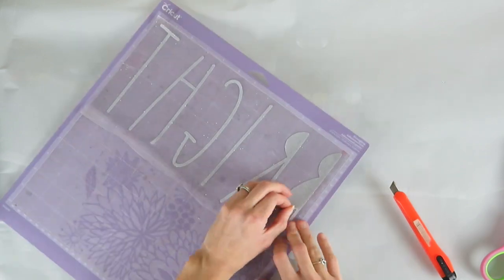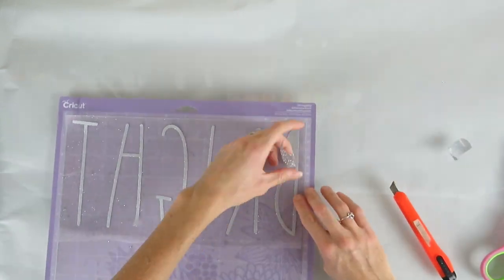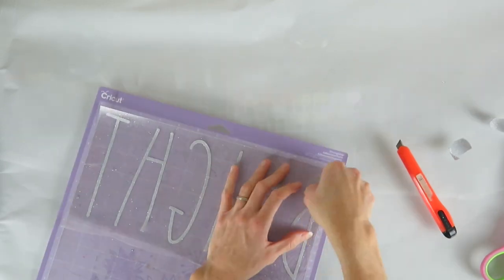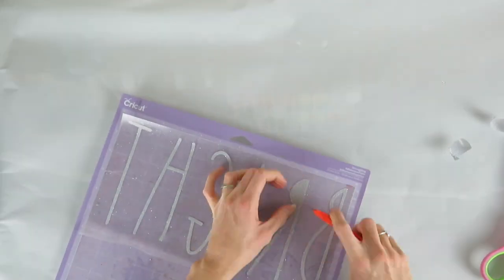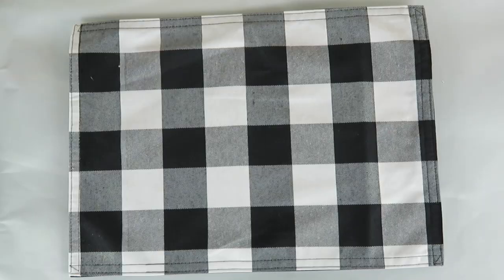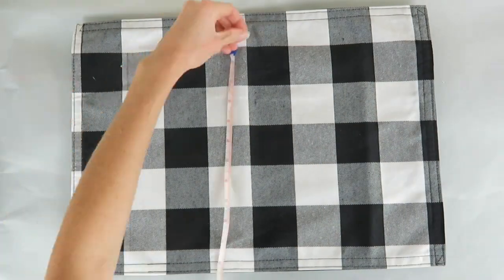my pillows. I decided to do Merry and Bright just because I thought it would work really well with what I had going on in my living room. I used my Cricut machine to make these and I use the font Cami-Ray. I will link that below in case you have a Cricut or a Cameo and you want to